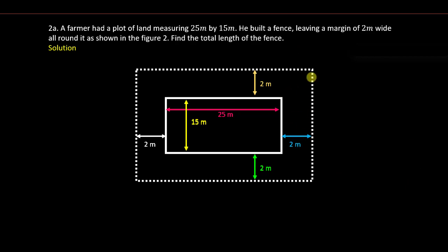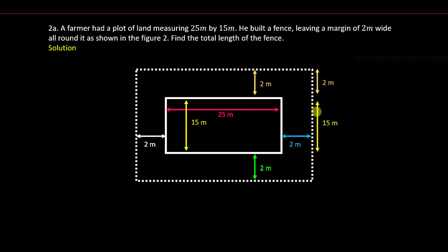This is a duplicate of the same diagram. We are going to illustrate how to get the measurement of the length and breadth. To determine the breadth: from one side to the inner edge is 2 meters, then the inner plot is 15 meters, and from the other inner edge to the outside is another 2 meters. Tracing these across, that gives us 19 meters, as you can see on the screen.